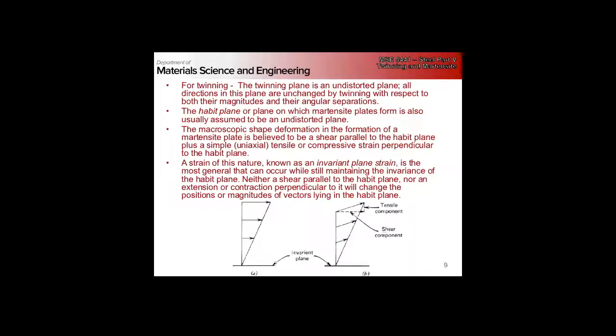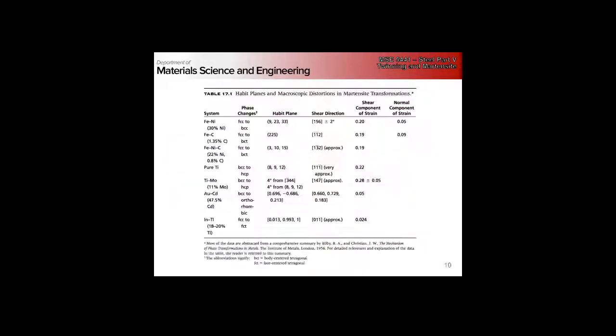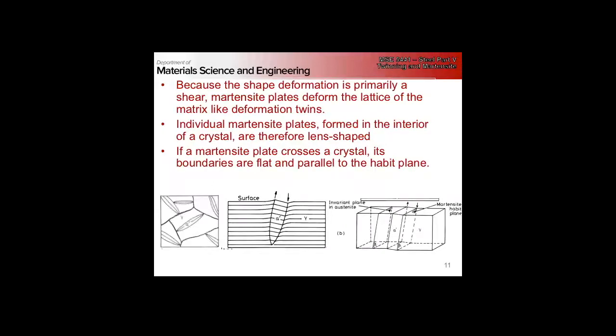Unlike twinning, which was a pure shear, martensite generally has both a shear and a tensile component associated with the transformation. In steels these can be quite large — around 20% shear with nearly a 10% normal component — giving a fairly significant strain that needs to be accommodated. In a polycrystal, martensite laths tend to take lenticular shapes because that minimizes the strain energy.